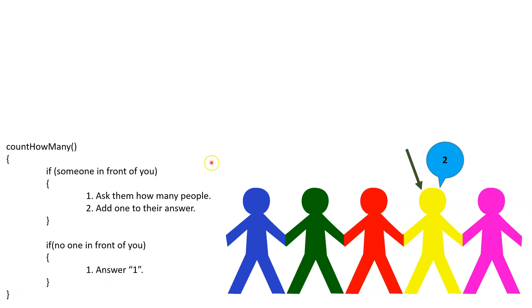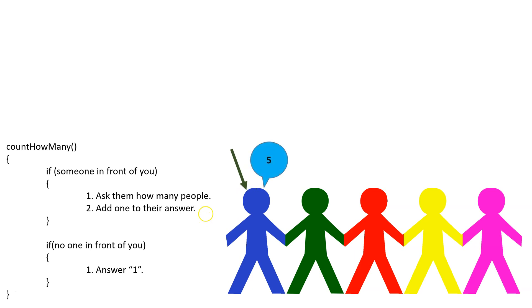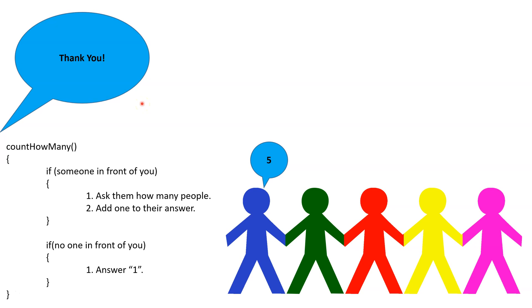Now that Yellow has a response from Pink, he can do the second part and add one to Pink's answer, and he responds two. Now that Red has an answer from Yellow, he adds one to Yellow's number and responds three. Next, Green adds one to Red's number and responds four. Finally, Blue adds one to Green's answer and responds five. Blue gives his answer back to the teacher, now that the algorithm is complete.